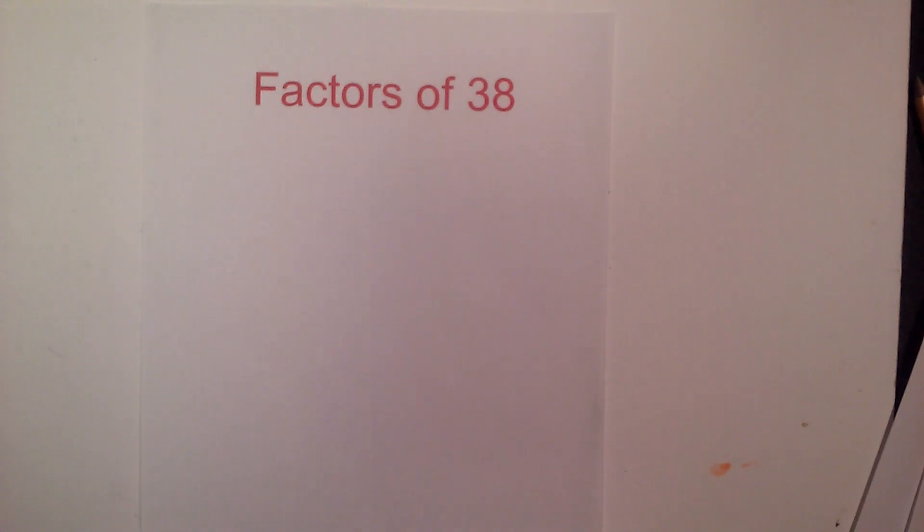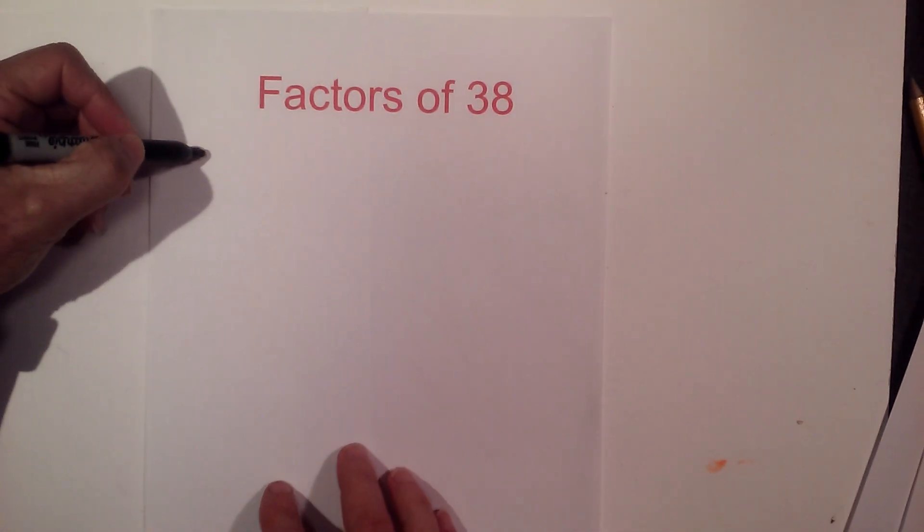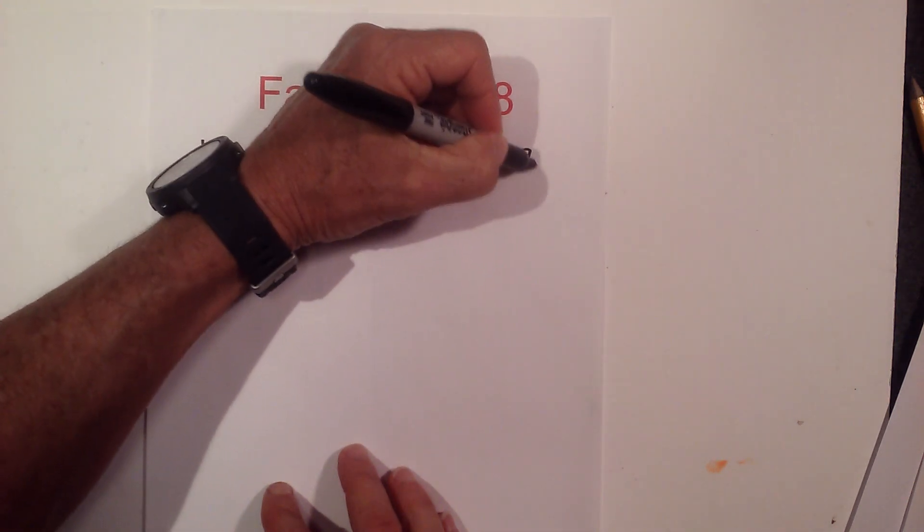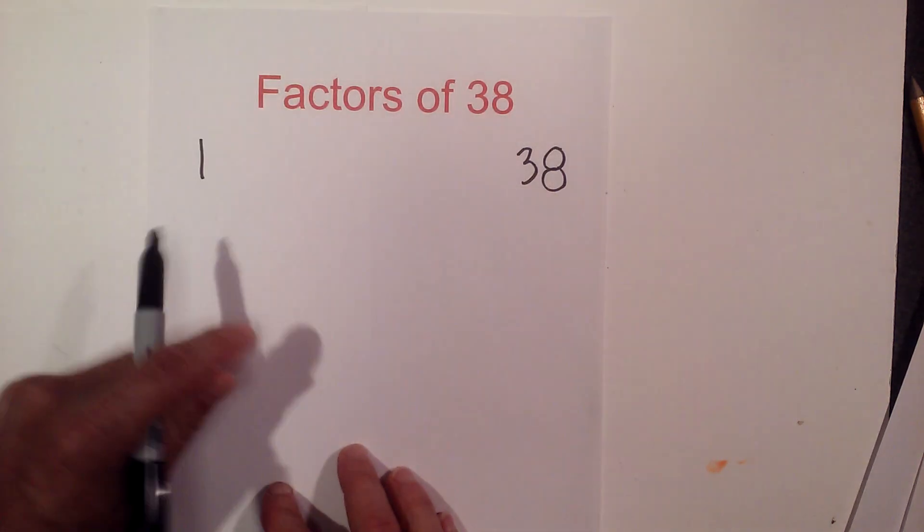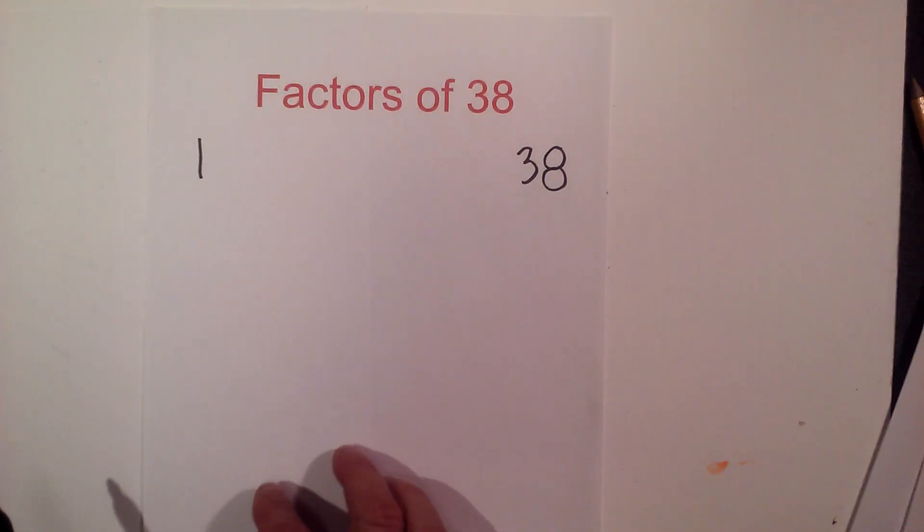The factors of 38, the prime factors of 38, and then the multiples of 38. So let's get started. I like to find the factors this way: 1 times 38, then find all the numbers in between that multiply together to equal 38.